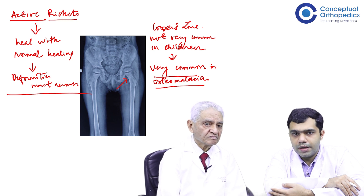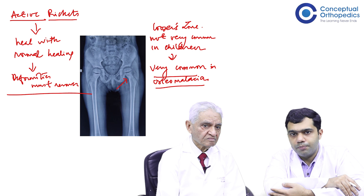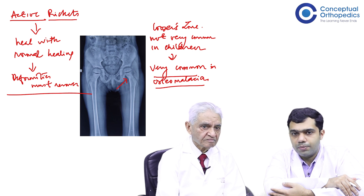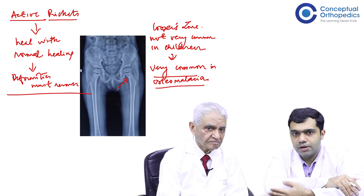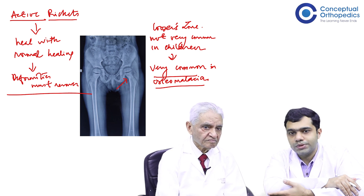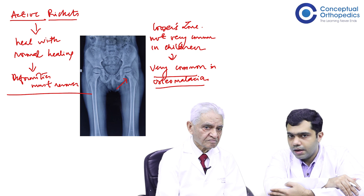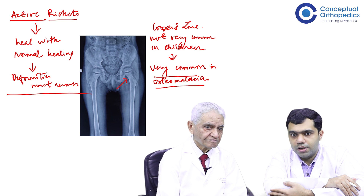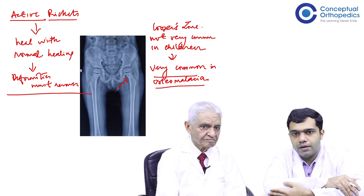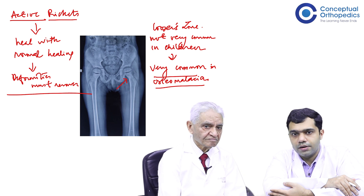In children, any pain around the hip may present as pain around the knee alone, so there can be issues happening at the hip level as well. Sir just wanted to share with us that even though looser zones are quite common in osteomalacia, the same can happen in children as well, and you should be well aware of the treatment for such fractures — you just need to give them adequate supplements of vitamin D and sunray exposure, and the children do very well and recover quite soon.